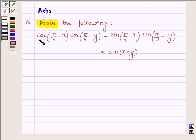cos(π/4 - x)cos(π/4 - y) - sin(π/4 - x)sin(π/4 - y) is equal to sin(x + y).